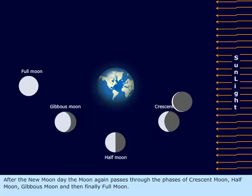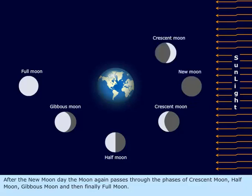After the new moon day, the moon again passes through the phases of crescent moon, half moon, gibbous moon, and then finally full moon.